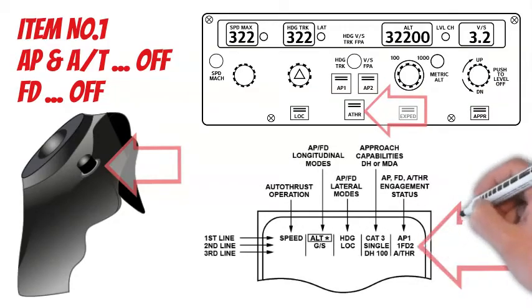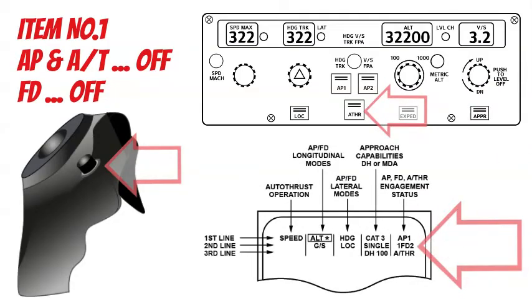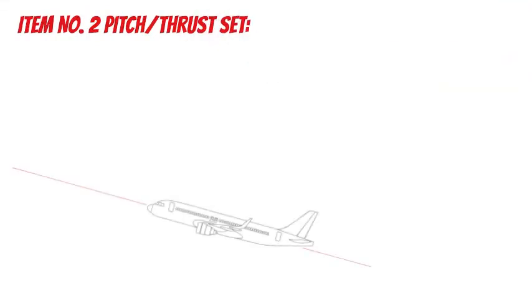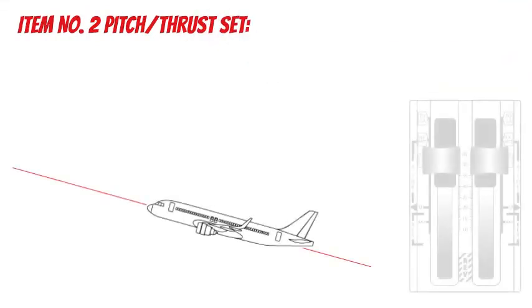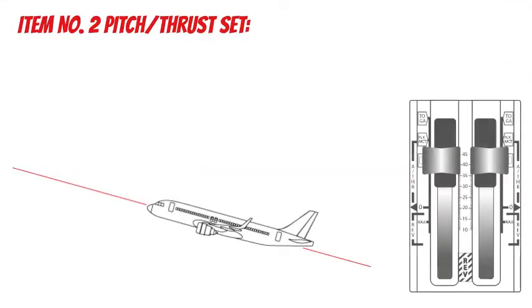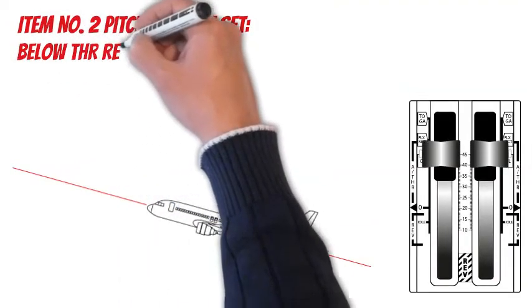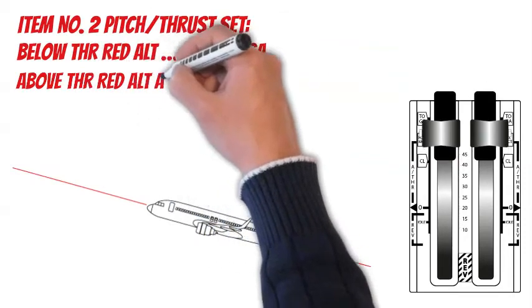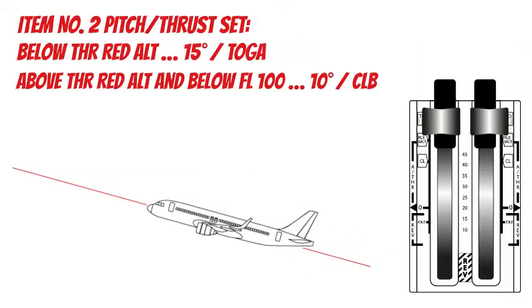Item number 2: Pitch and thrust — set. Below thrust reduction altitude: 15 degrees pitch and TOGA set. Above thrust reduction altitude and below flight level 100: 10 degrees pitch and CLIMB set.